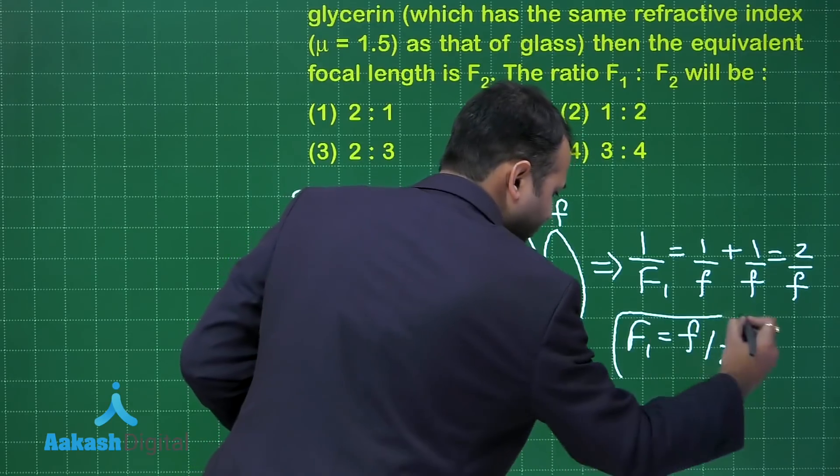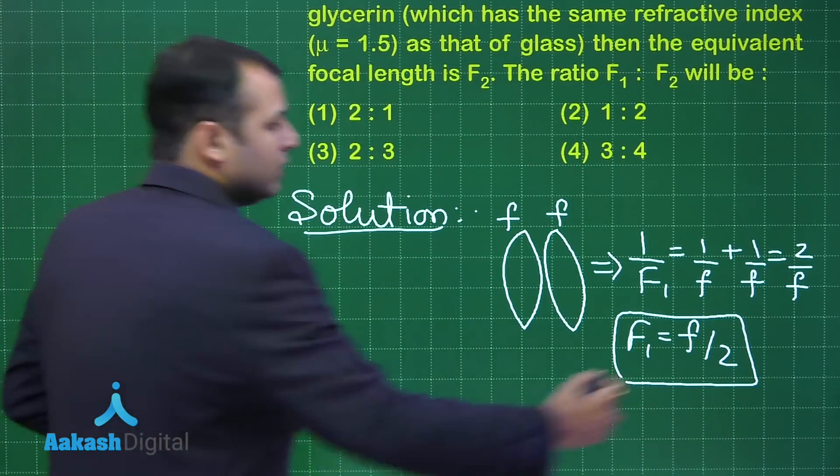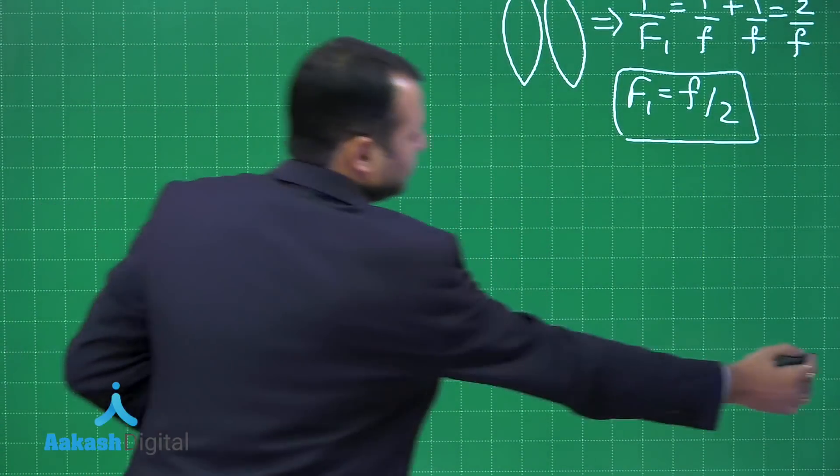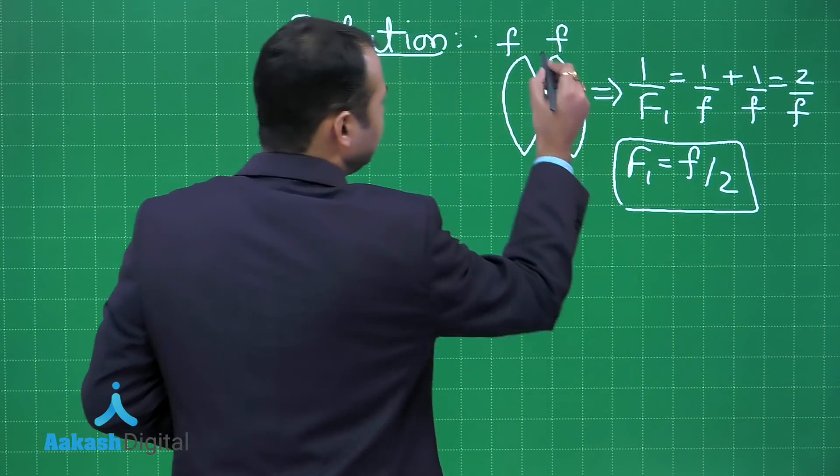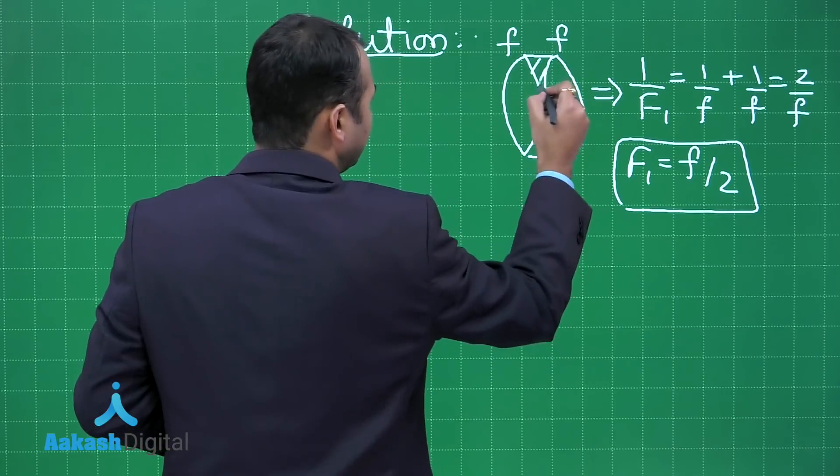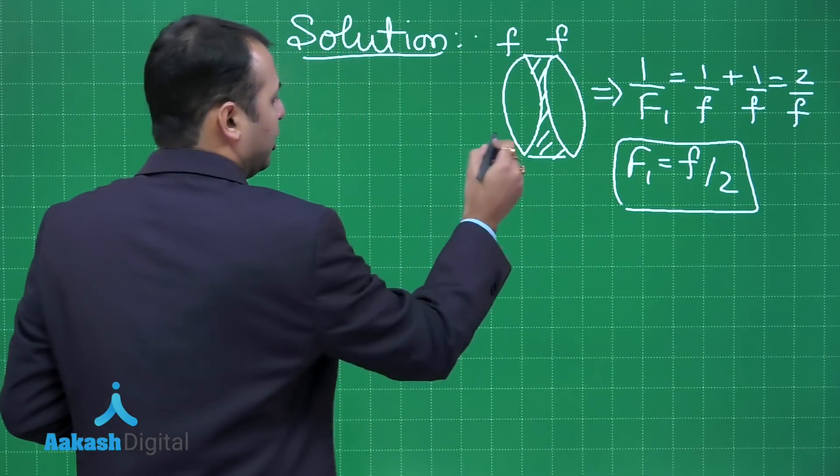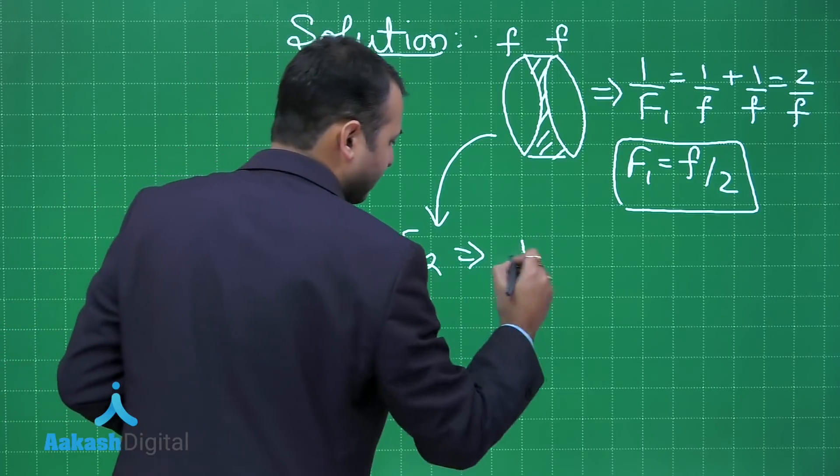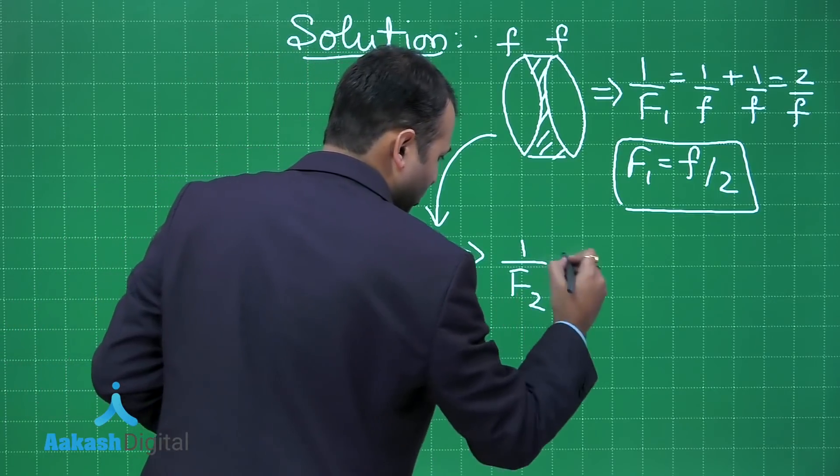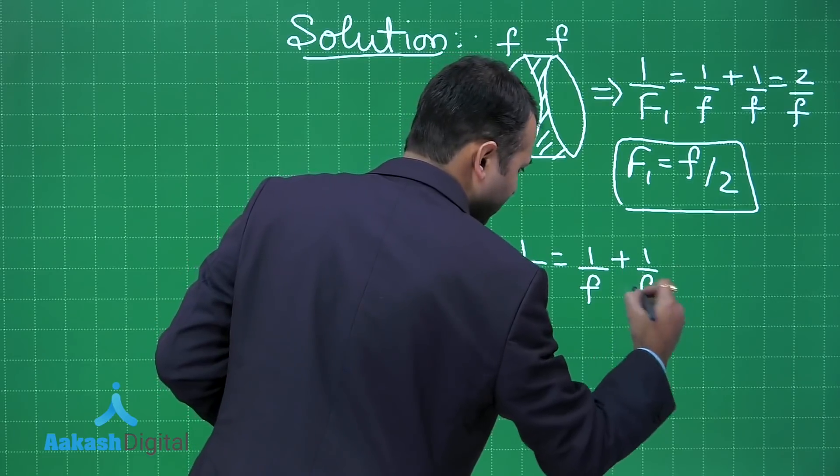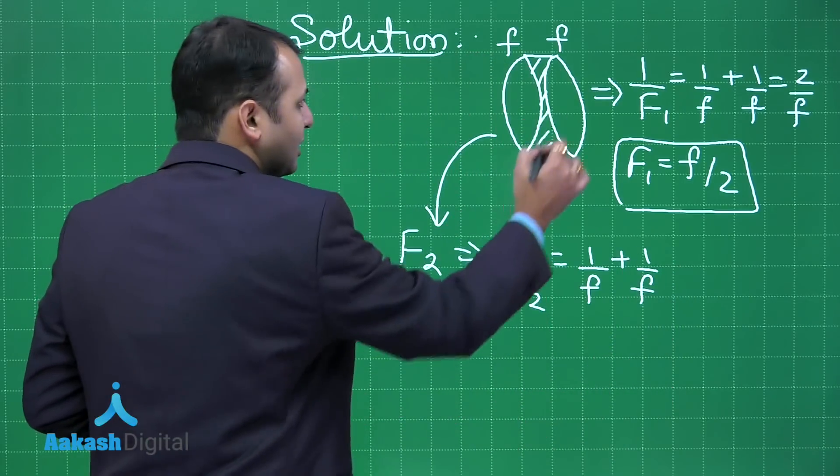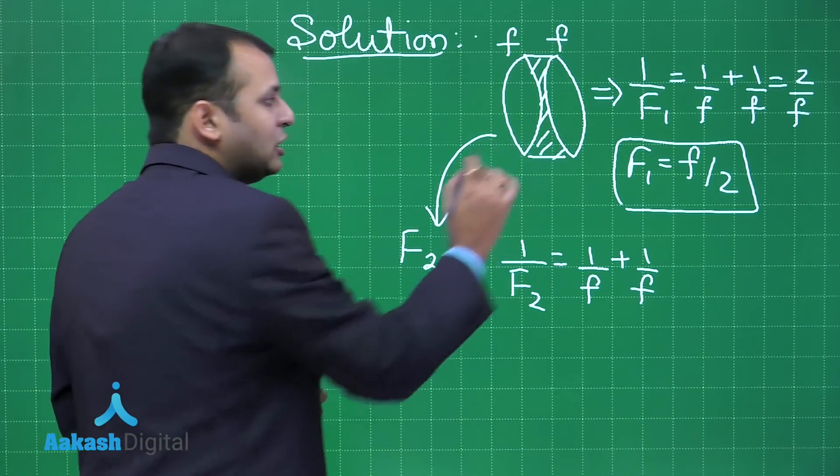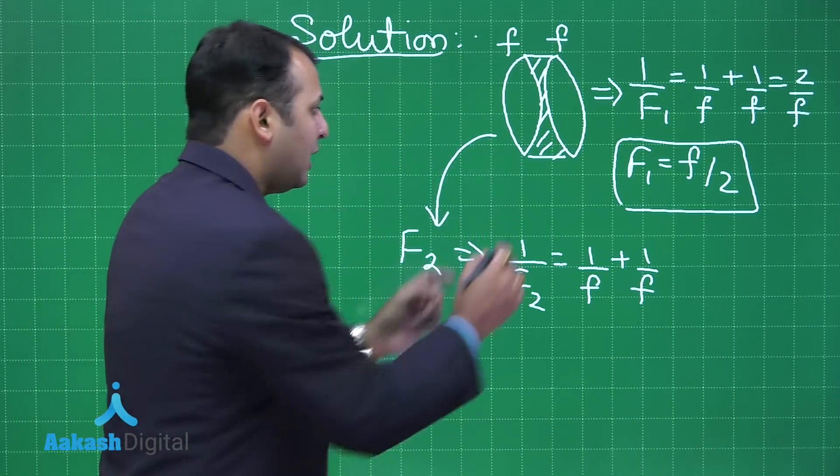Now in the second case, the space between these two lenses, you see the space between these two lenses is filled with some liquid. Now in this case the focal length becomes F₂. So for this I will be writing 1/F₂ equals 1/f plus 1/f. Now the glycerin part will act as a concave lens having same radius of curvature.